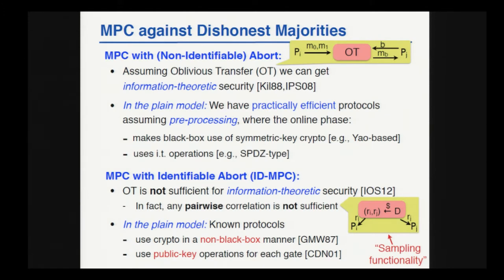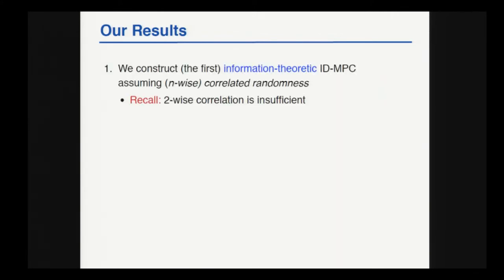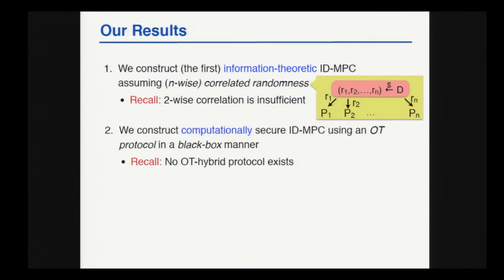In this work, we improve on both directions. We provide the first information-theoretic ID MPC protocol from N-wise correlated randomness — by that I mean given access to a sampling functionality which samples an N-vector and gives one component per party — contrasting this to the impossibility of using pairwise correlated randomness. We also provide the first computationally secure ID MPC protocol which makes black-box use of a cryptographic primitive, in particular of an oblivious transfer protocol. As a nice theoretical teaser, this contrasts with the fact that we cannot have such a protocol using an OT hybrid. To our knowledge, this is the first task demonstrating this theoretic paradox.